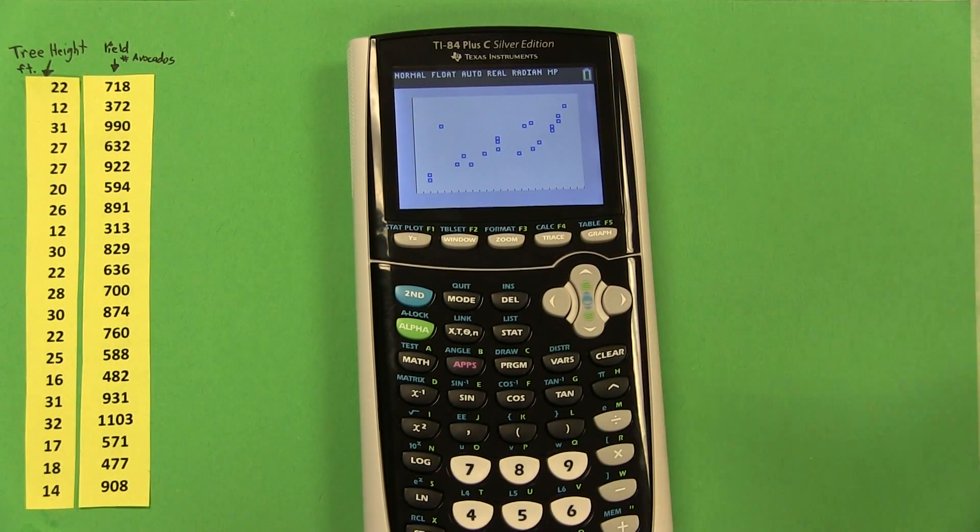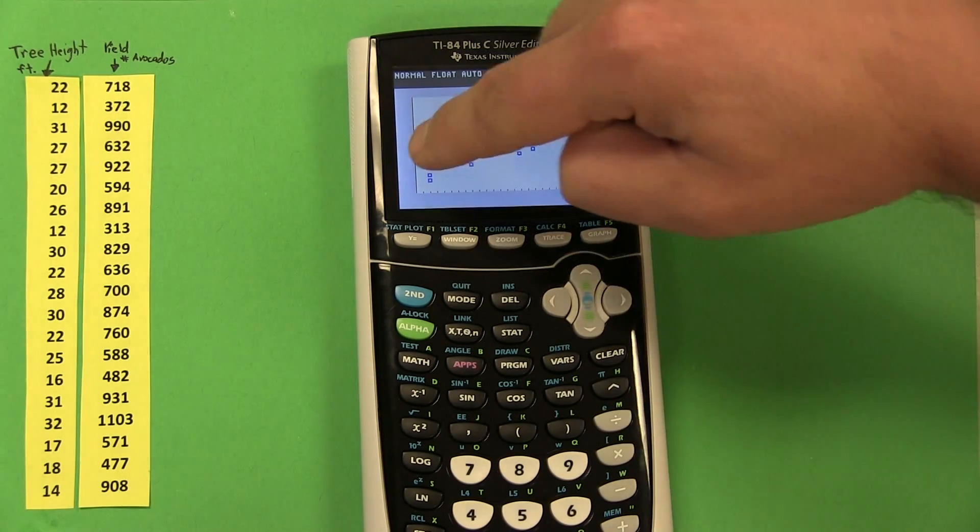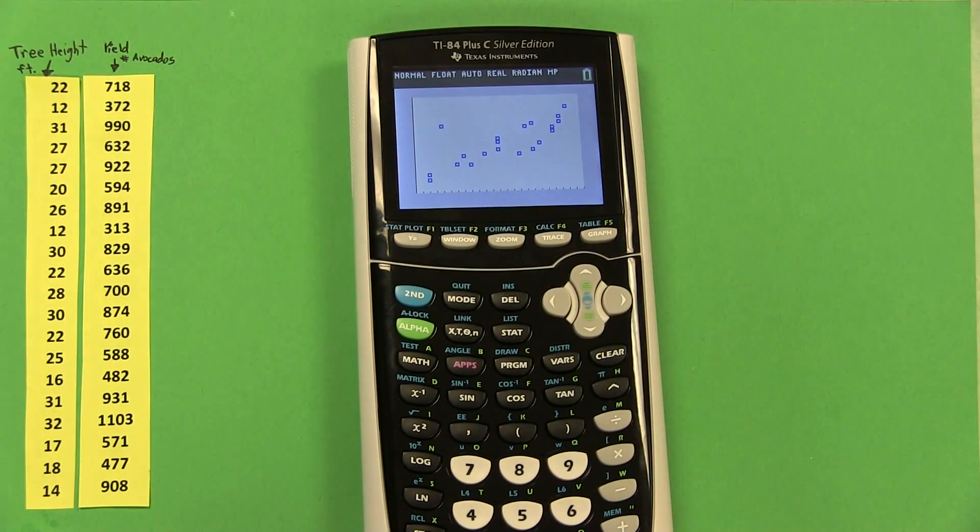So what we see from this is a moderately strong positive linear relationship between tree height, which is our explanatory variable, and avocado yield, which is our response variable.